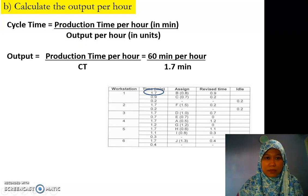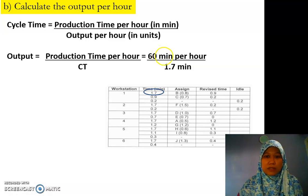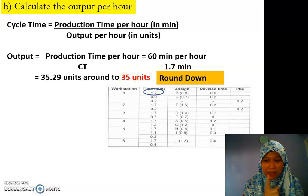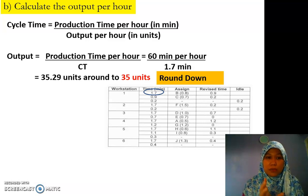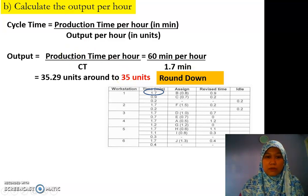For the output it becomes production time per hour over CT, which in this case is 1.7. Production time per hour is 60 minutes, so we can find that the output is 35 units. For output we need to round down — remember that. So instead of 35.29, we round down to 35 units. That answers question B.